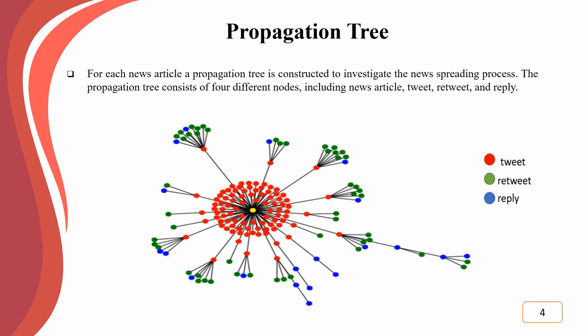At the first step of the proposed method, we construct the propagation tree. As depicted in this figure, a propagation tree is developed to investigate the process of news dissemination. We utilized the NetworkX library in Python to construct the propagation tree. The propagation tree is made up of four node types: news article, tweet, retweet, and reply. The root of the propagation tree is a news article, and the related tweets are directly connected to the root. Every tweet may be a sub-tree with multiple retweets and reply nodes. On Twitter, a user may respond to an initial tweet or another user's reply, creating a conversation thread represented in the propagation tree as a chain of replies.